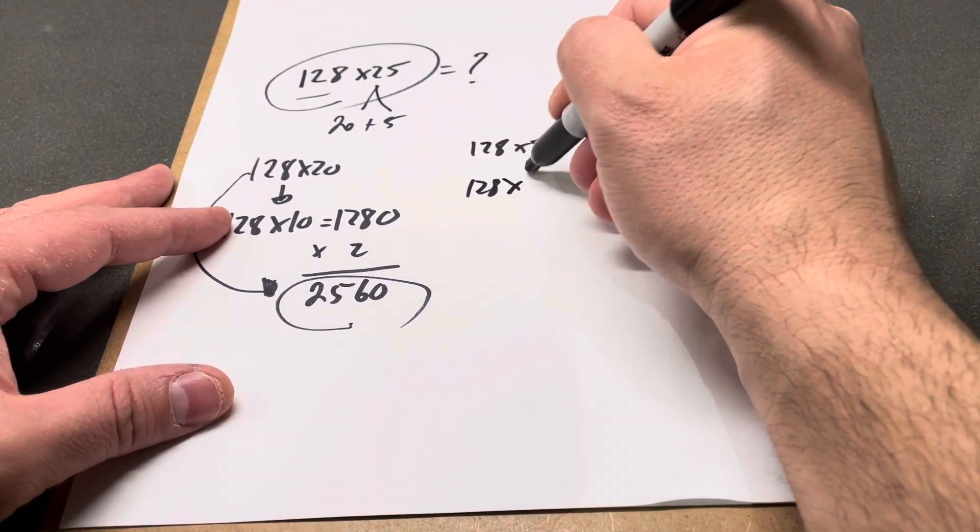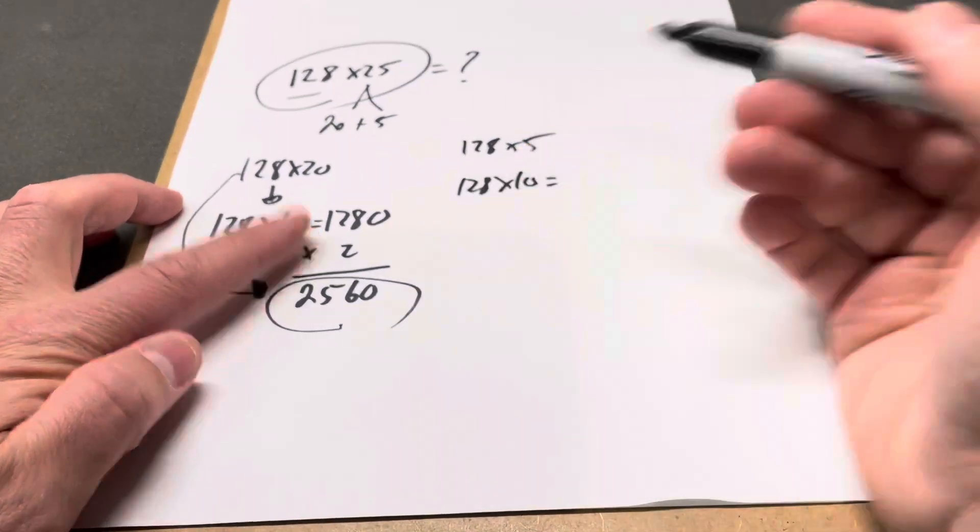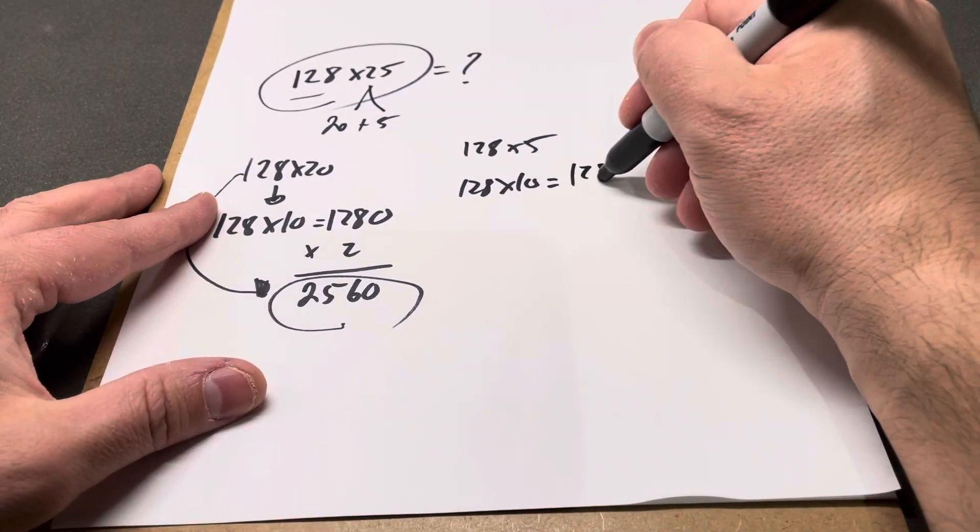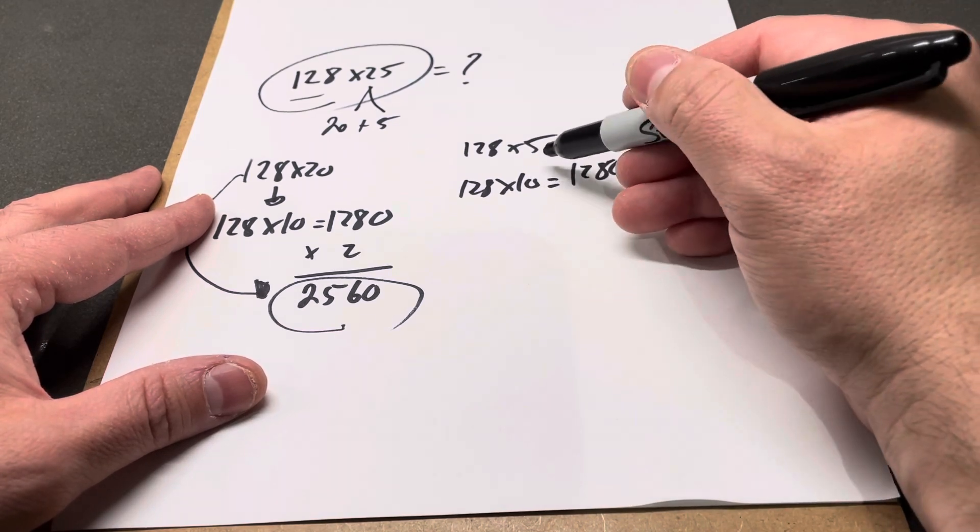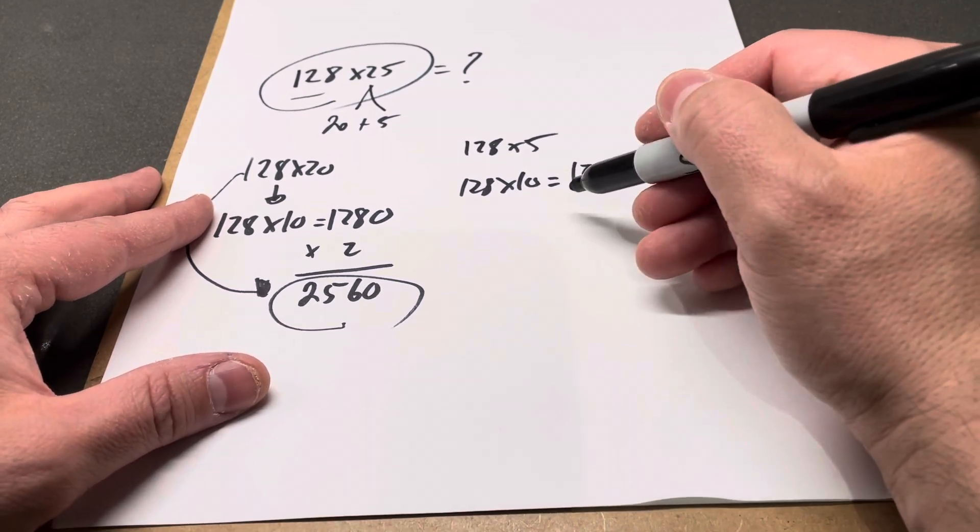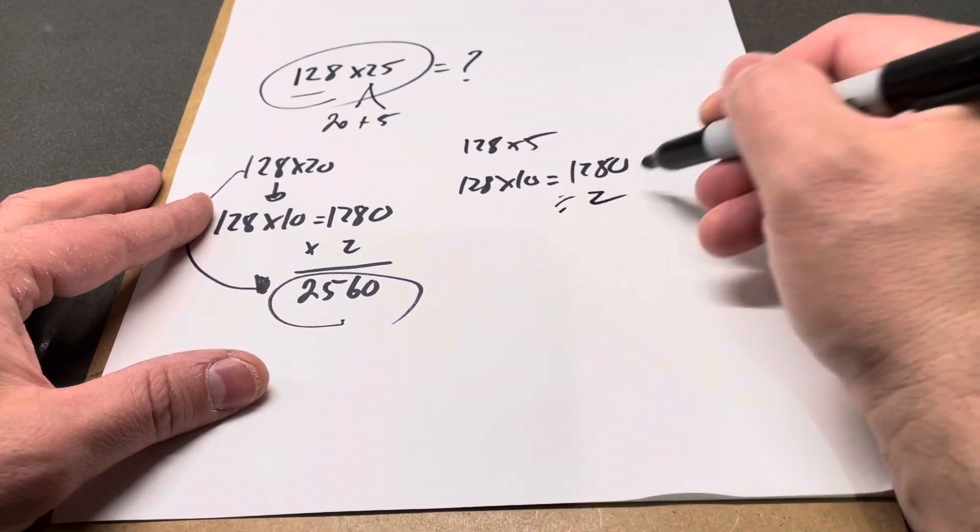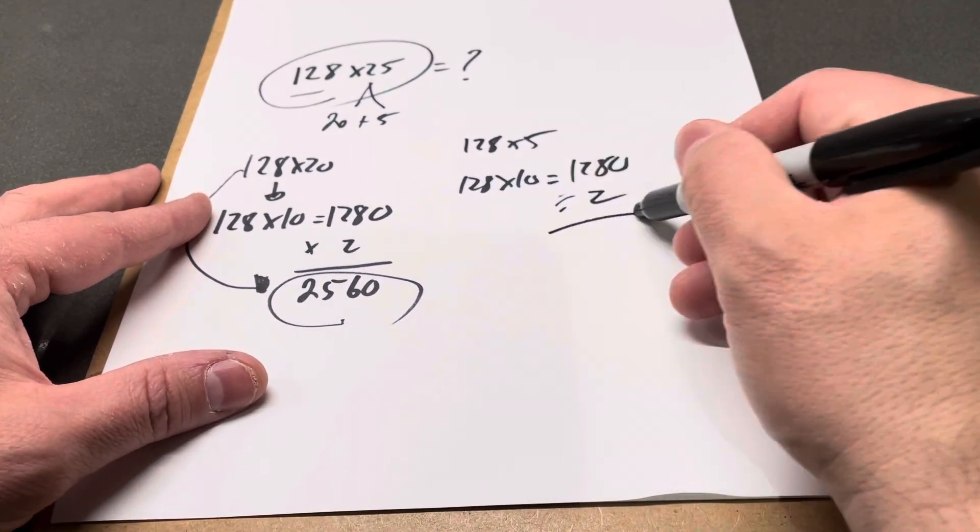Five is half of 10, so in order to get 5 from 10, I would have to cut this number in half - divide by 2. 1280 divided by 2 is 640.